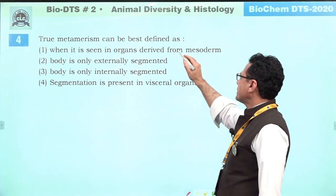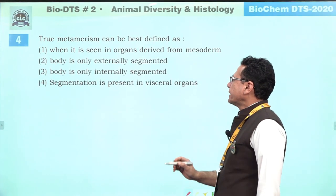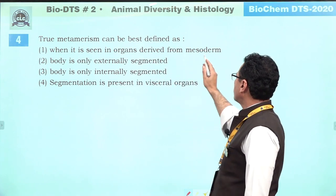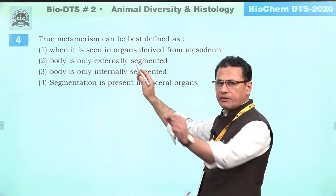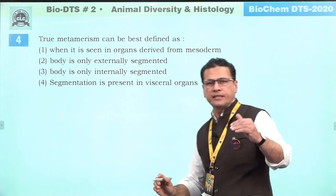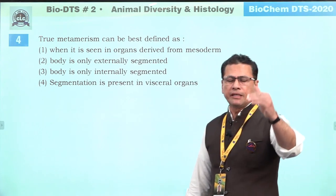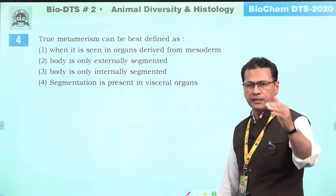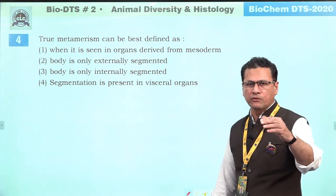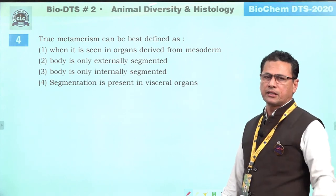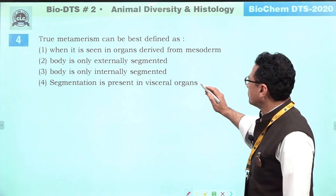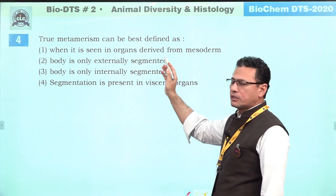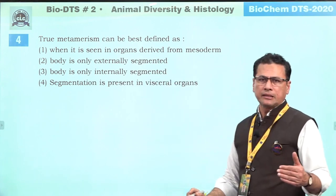True metamerism can be best defined as: the metamerism when it is seen in organs derived from mesoderm — that is the correct definition. The exact definition of metamerism is that when segmentation is seen in mesodermally derived organs, then it is called true metamerism.